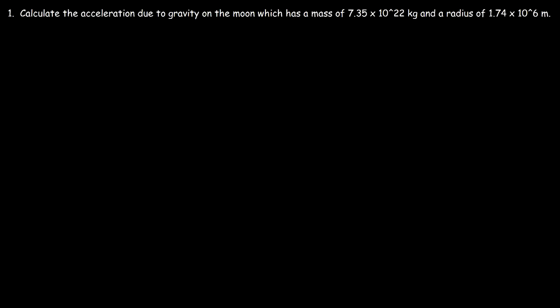This video is all about gravitational acceleration and how to calculate it. Let's start with this example: calculate the acceleration due to gravity on the moon, which has a mass of 7.35 times 10 to the 22 kilograms and a radius of 1.74 times 10 to the 6 meters.